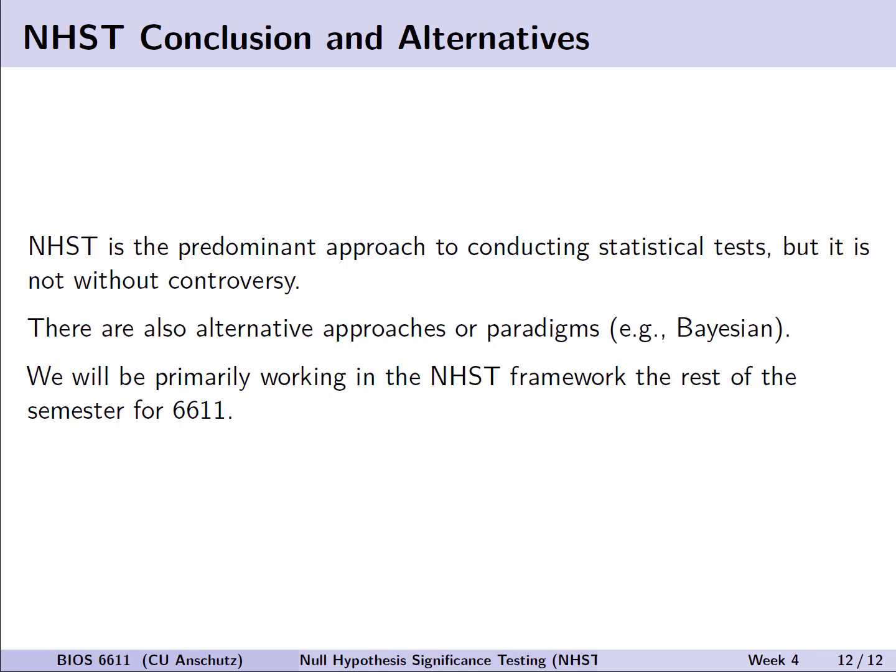So, the NHST approach is the predominant approach in statistics today and across many fields, but it's not without its controversy. For the homework, you'll have your selection amongst an entire set of articles from the American Statistician, a special edition of the journal in 2019, where they exclusively looked at moving to a world beyond using just p less than 0.05 and potential alternatives. For example, there are other approaches and paradigms like the Bayesian approach, or other things included that people have tried to reframe how we might think of significance. With that being said, though, we will primarily be working in the NHST framework for the rest of the semester, as we learn about, of course, its limitations, but also how we can leverage it to draw appropriate conclusions with our data.